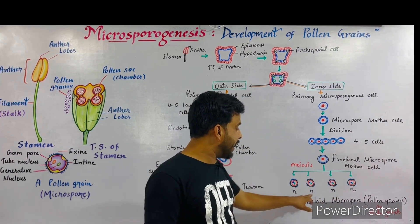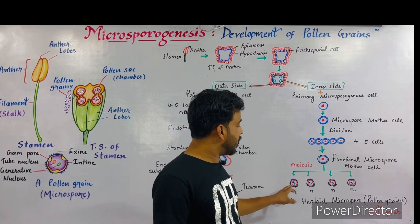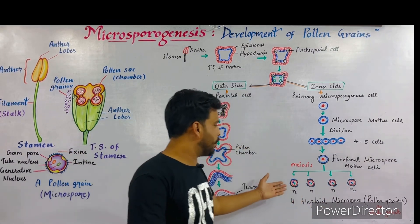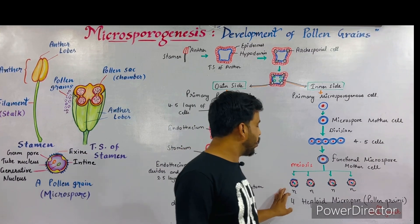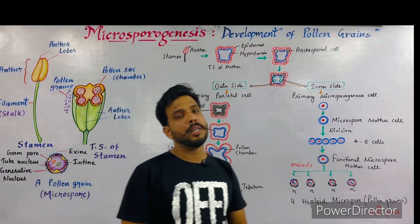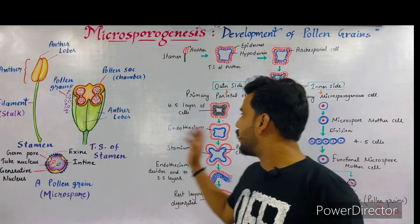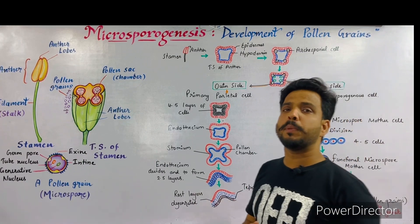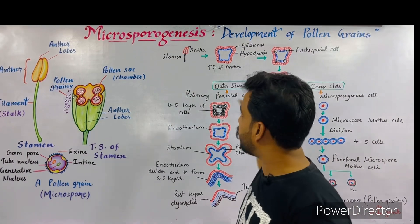The functional microspore mother cell divides by meiosis to form four haploid microspores — n in number, meaning haploid with half the chromosomes. These are also known as pollen grains and male gametes. This is the phenomenon of microsporogenesis, in which pollen chambers, tapetum, and pollen grains are produced. In the angiospermic plant, the formation of microspores or pollen grains is termed microsporogenesis.